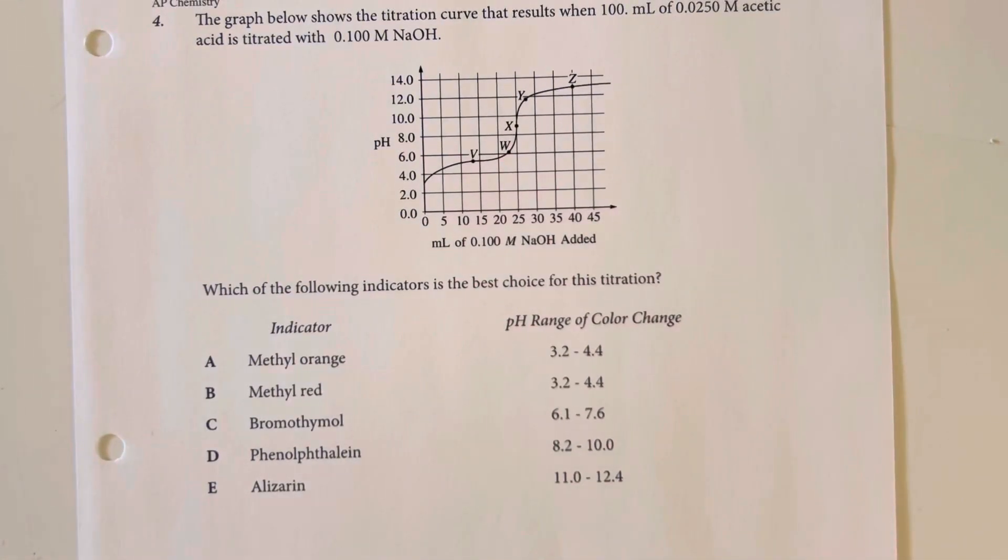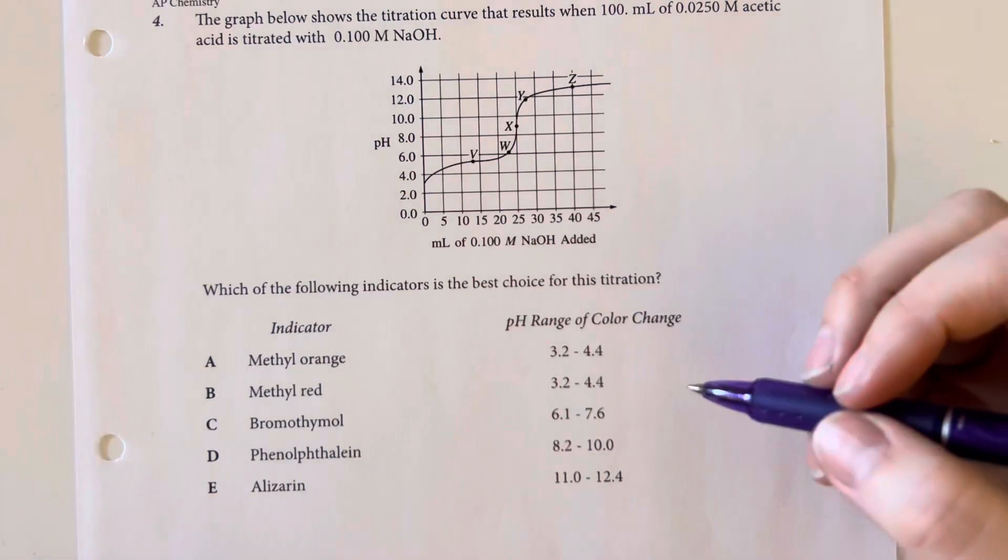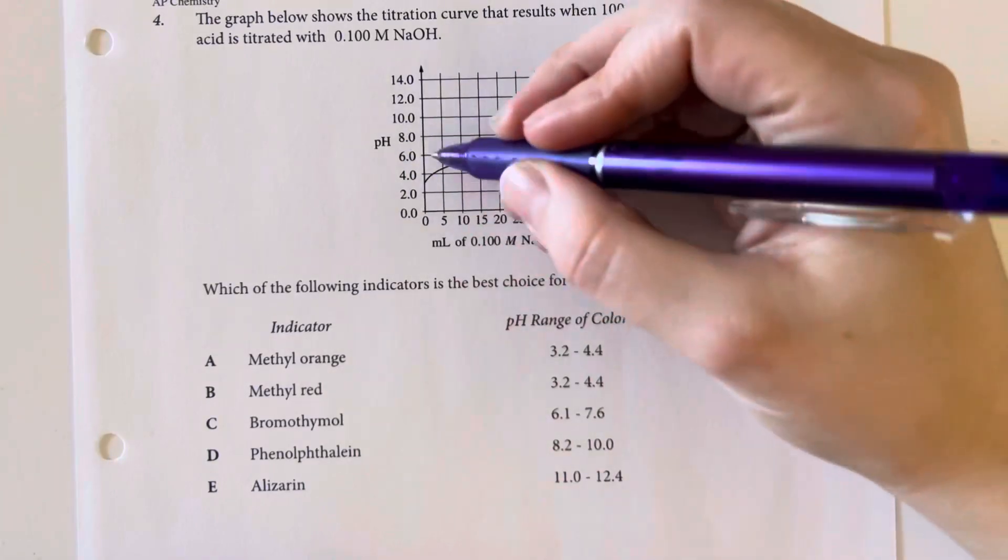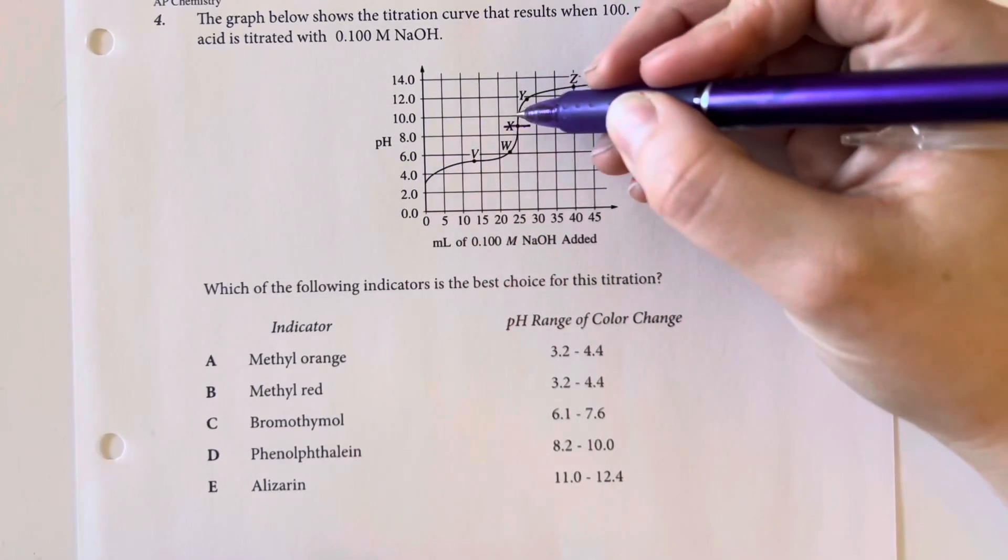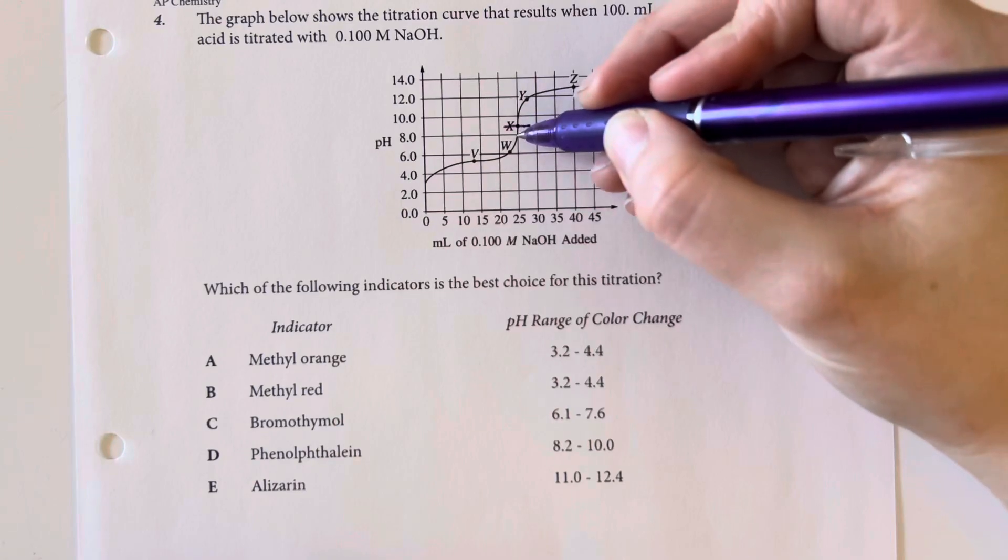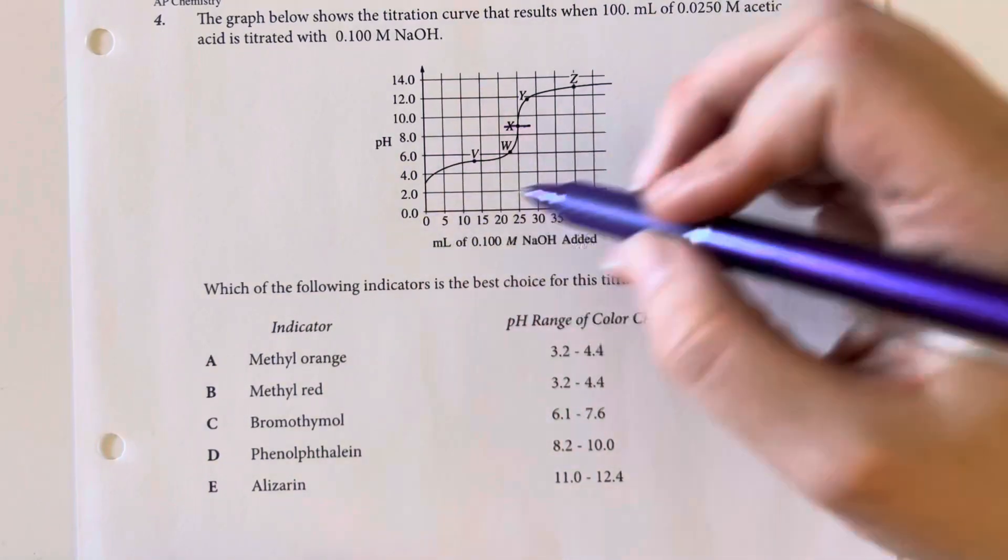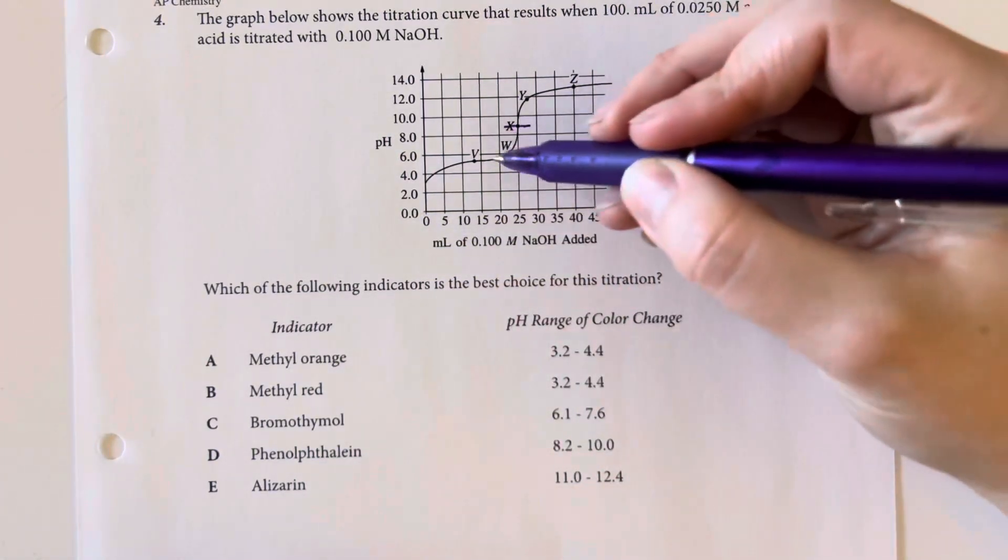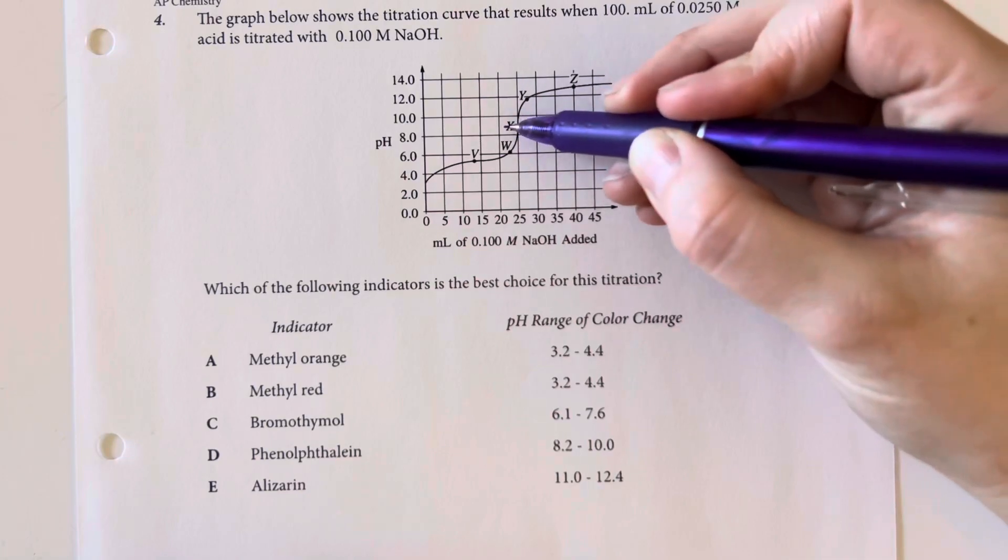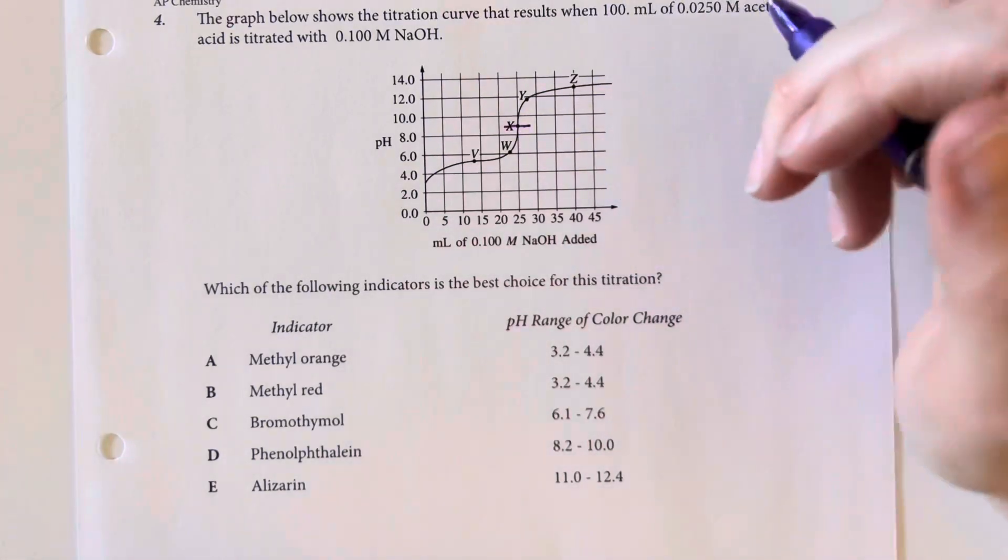The graph below shows the titration curve that results when 100 milliliters of 0.0250 molar acetic acid is titrated with 0.1 molar sodium hydroxide. Which of the following indicators is the best choice for this titration? So we can see that overall our pH equilibrium here at X is going to be between 8 and 10, and so we would choose an indicator that would change color closest to that pH range, and so that would be phenolphthalein or option choice D.